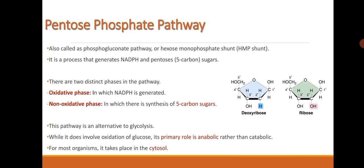Pentose phosphate pathway, also called phosphogluconate pathway or hexose monophosphate shunt, is a process that generates NADPH and pentose sugars. There are two distinct phases in the pathway. One is the oxidative phase, in which NADPH is generated, and second is the non-oxidative phase, in which there is synthesis of 5-carbon sugars. This pathway is an alternative to glycolysis. While it does involve oxidation of glucose, its primary role is anabolic rather than catabolic.